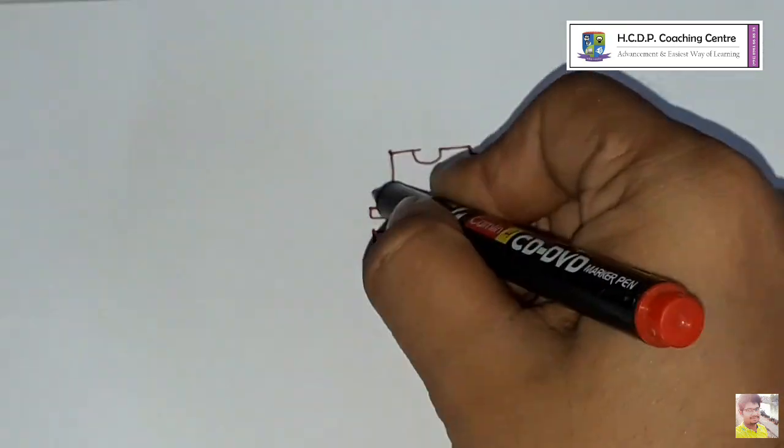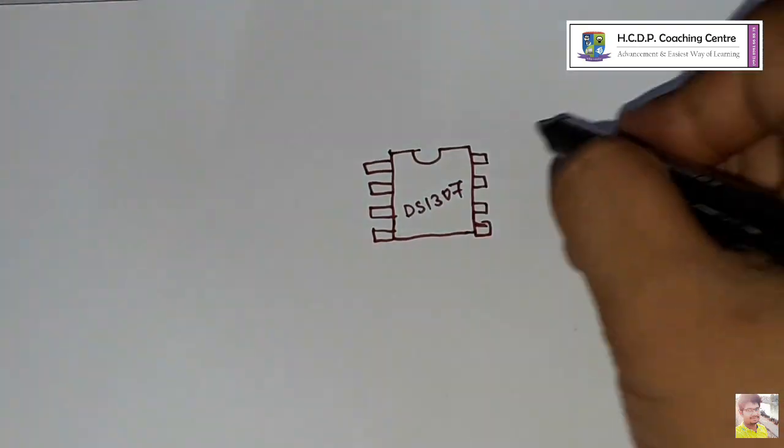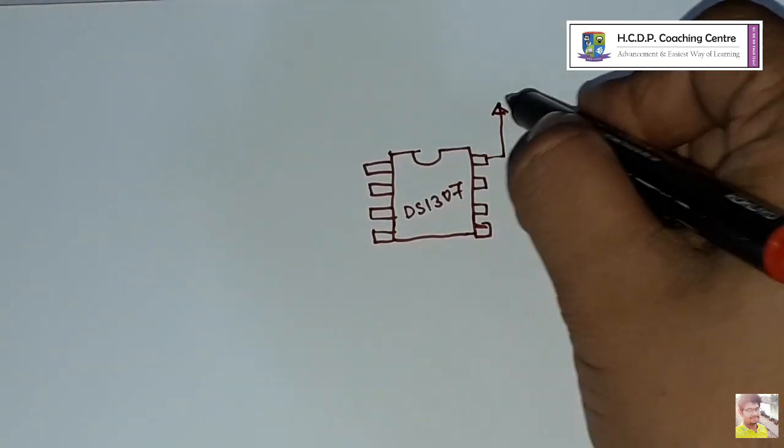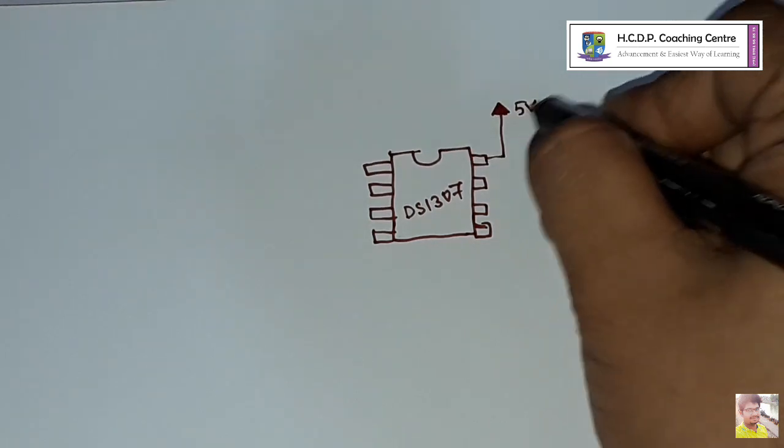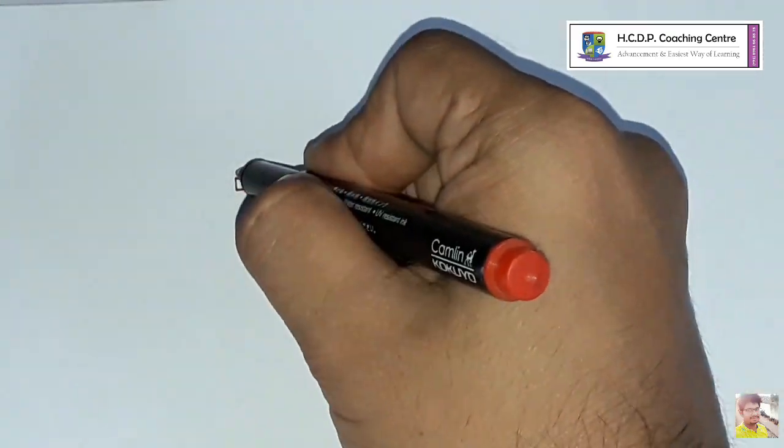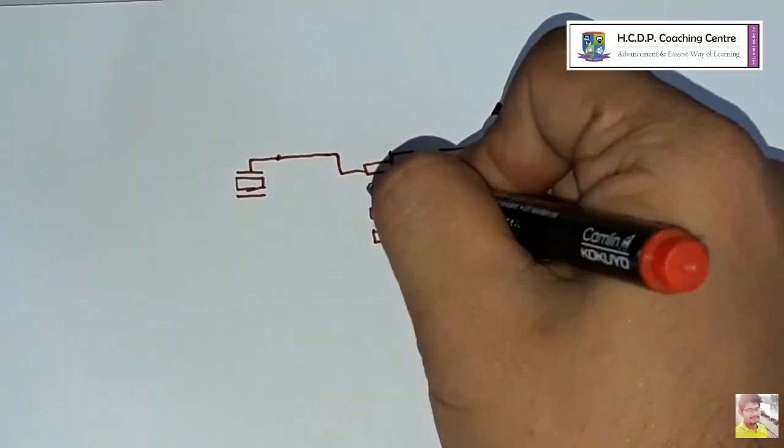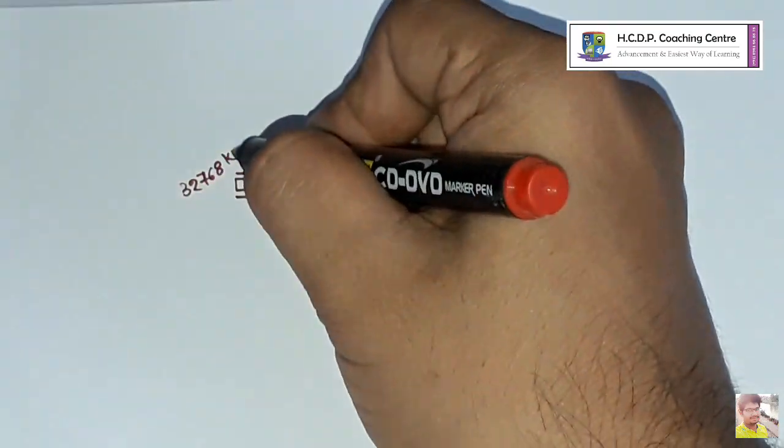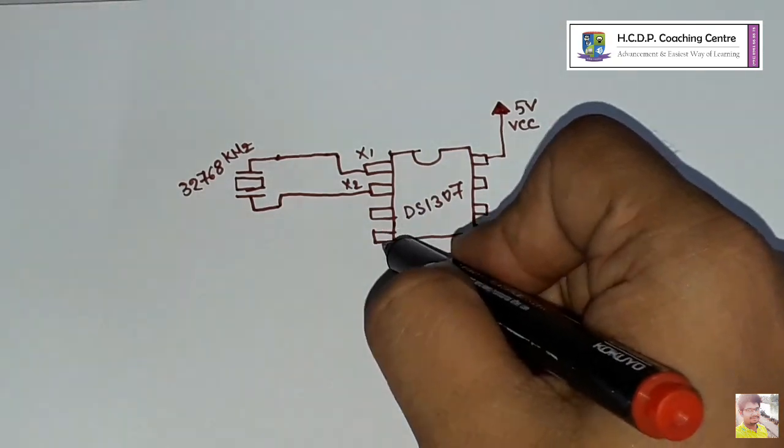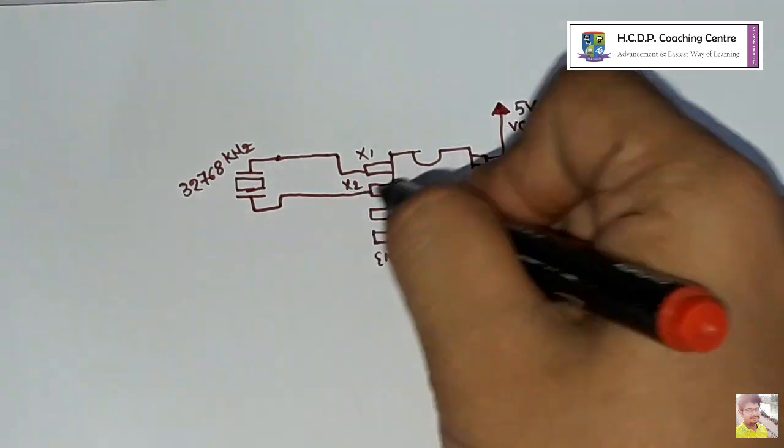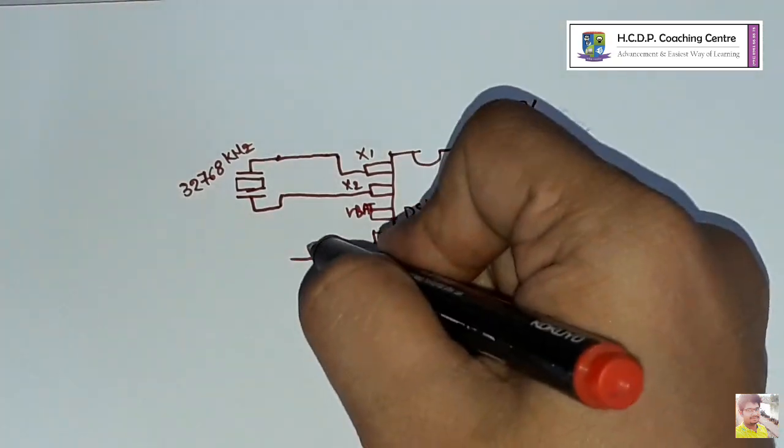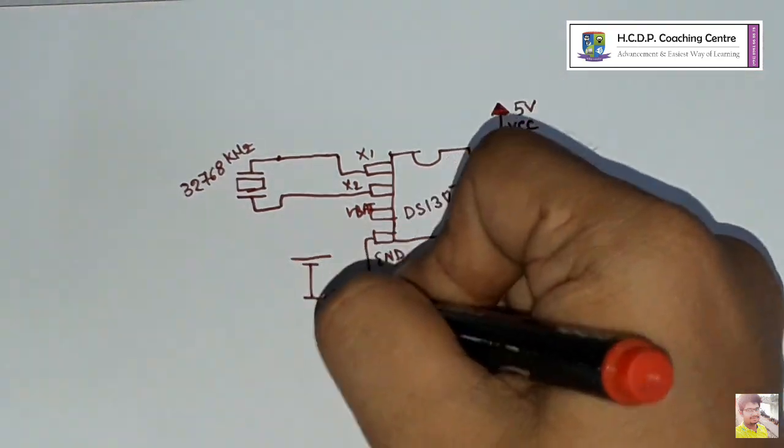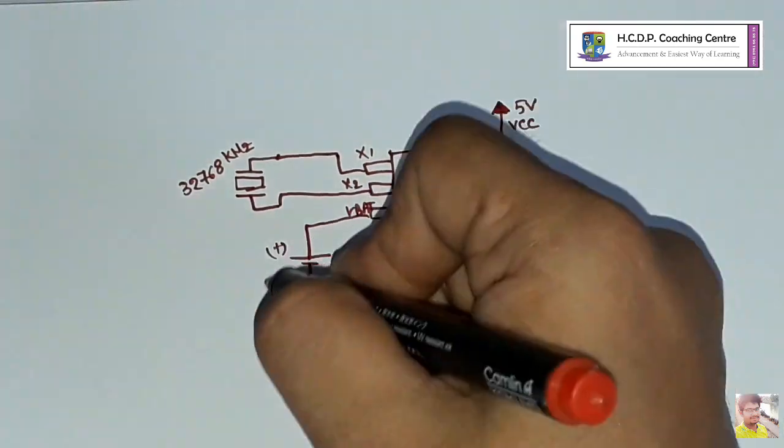First we have to understand the function of RTC. Pin 8 of the chip is voltage input or VCC. Pin 1 and 2 are connected with the 32768 kilohertz crystal. Pin 4 is connected to the ground.